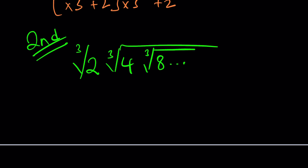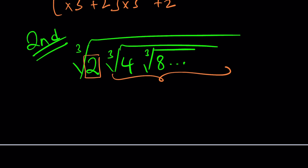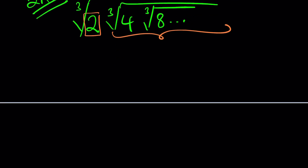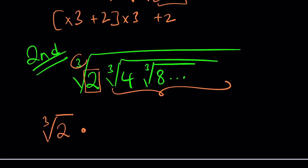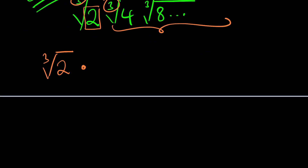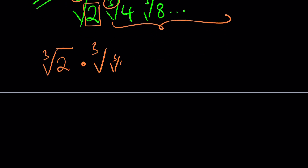So instead of trying to get the 2 inside and then combine with the 4 and just grow everything, focus on individual numbers. For example, what happens to this 2? It's under one radical. You have the cube root of 2. Here is the scenario: you have the cube root of 2, and we can separate these — times the cube root of 4. But remember, the 4 is being cube rooted twice, so it's the cube root of the cube root of 4.